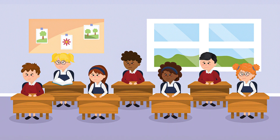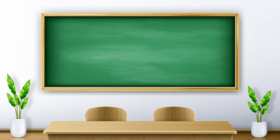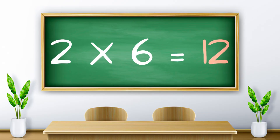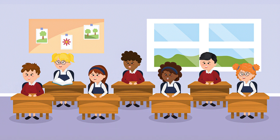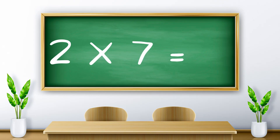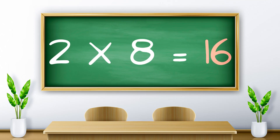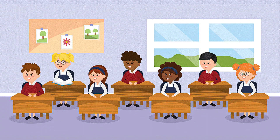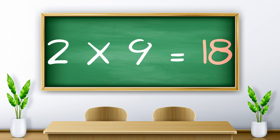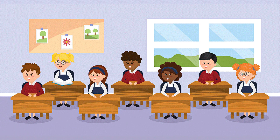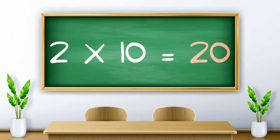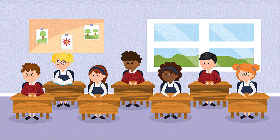Two fives are ten. Two sixes are twelve. Two sevens are fourteen. Two eights are sixteen. Two nines are eighteen. Two tens are twenty.